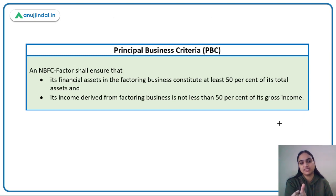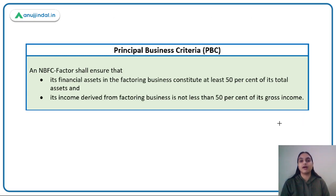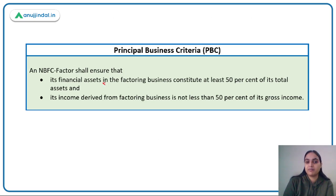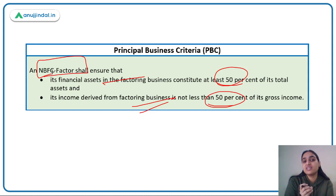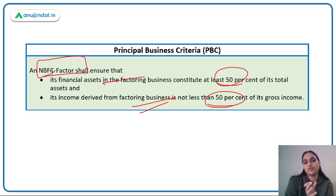Coming to the principal business criteria: an NBFC factor needs to ensure that financial assets in factoring business constitute at least 50% of its total assets, and income derived from factoring business should not be less than 50% of its gross income. So at least 50% of its assets must be in factoring, and 50% of its gross income must be derived from factoring.